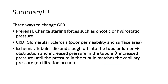To summarize, there are three ways to change GFR: prerenally, by changing Starling forces and adjusting oncotic and hydrostatic pressure; in chronic kidney disease, by changing capillary permeability through glomerular sclerosis; and finally, if there's ischemia or structural damage, tubules may die and slough into the lumen causing obstruction, which increases tubular pressure, raises hydrostatic pressure, and ultimately decreases capillary permeability and GFR.